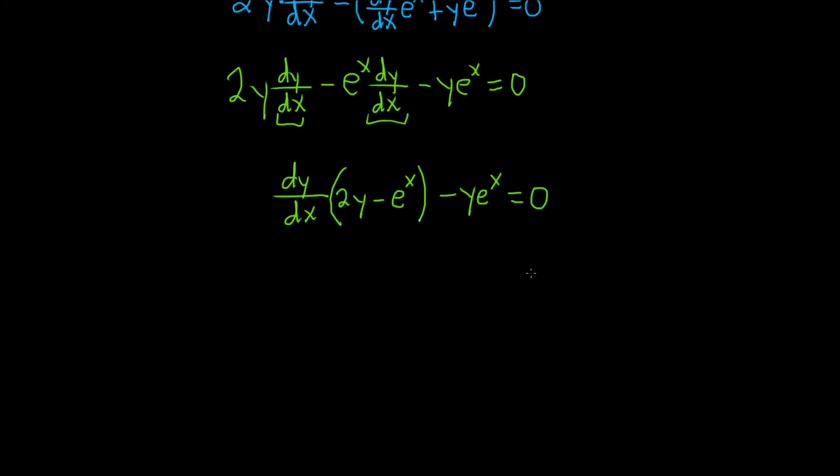We're looking for dy/dx. So we factored it out here. And now we're going to add this to the other side. So we have dy/dx parentheses 2y minus e to the x. And that's equal to y times e to the x.